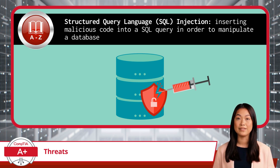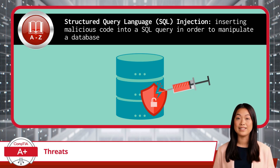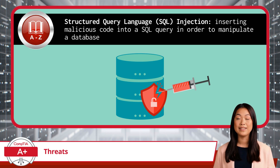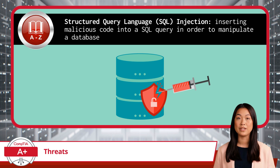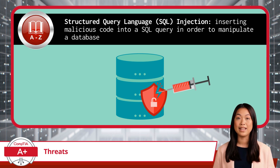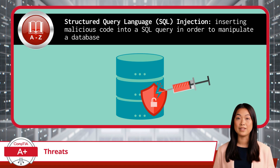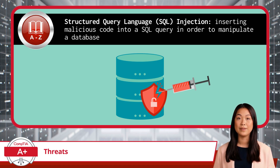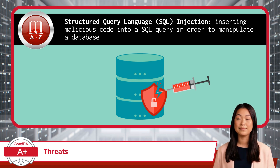The best defense against SQL injection is input validation — making sure that only the correct type of data, such as text for a username or a string of numbers for a phone number, can be entered into form fields. By restricting what can be entered, you can block attackers from inserting malicious code and prevent it from being executed against your database.